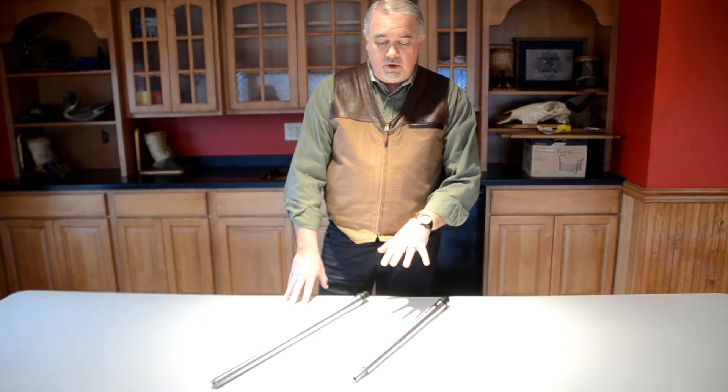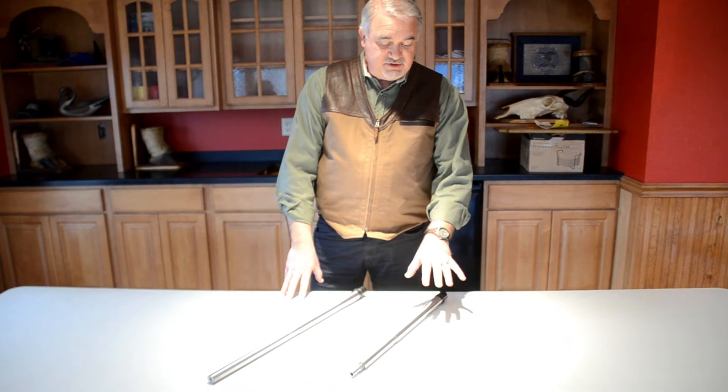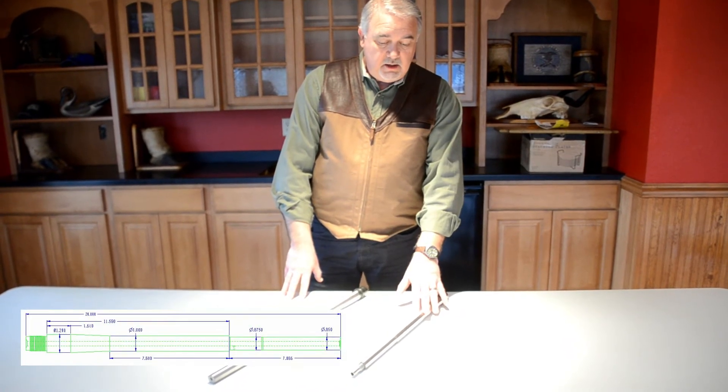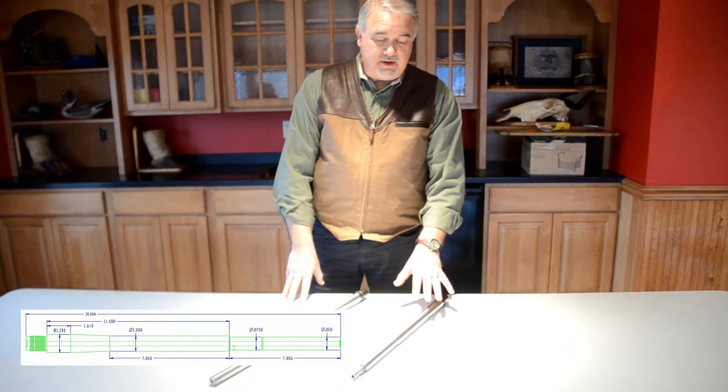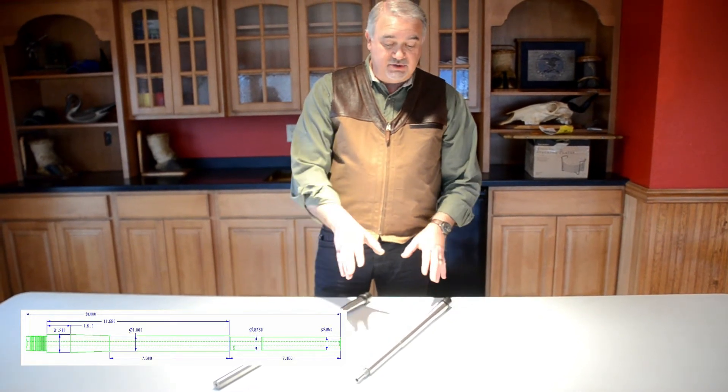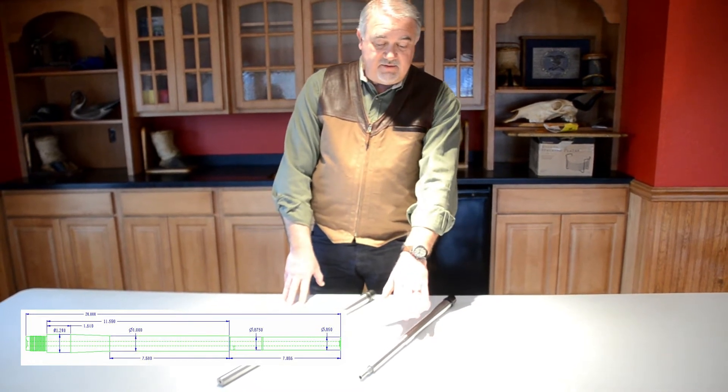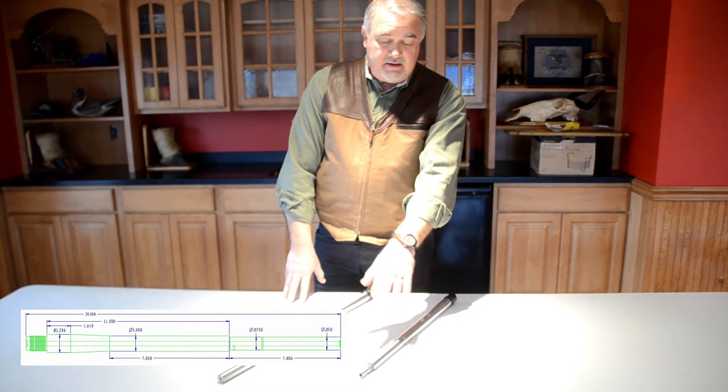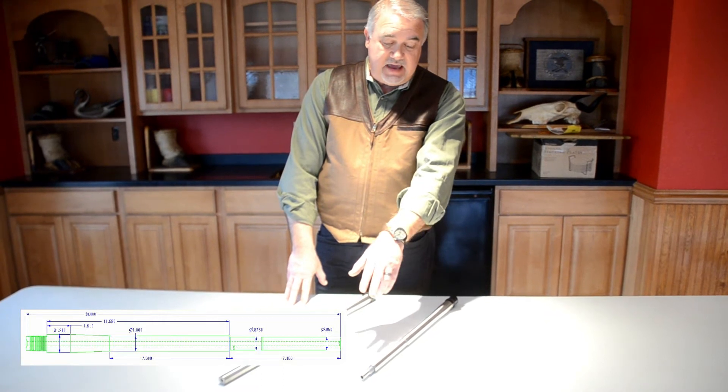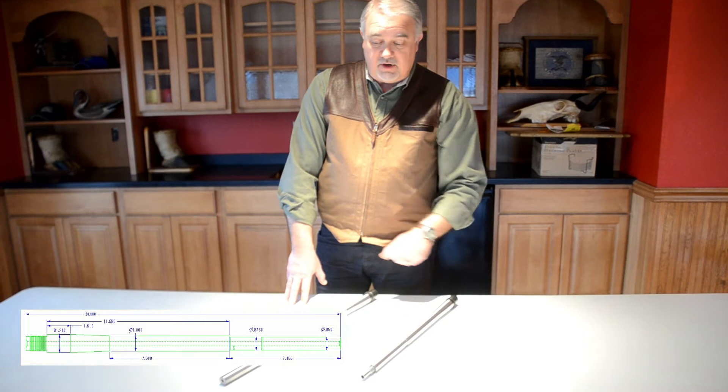The two we have here are the two we offer in the AR-10 platform, which is going to be the M110 Contour. This one is only available in .308 caliber and only in 20-inch configuration. This one is going to have an 875 gas block grind and again finished at 20 inches with or without the muzzle threads on it.